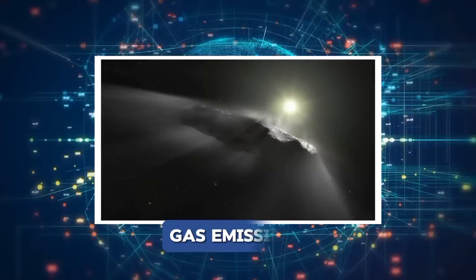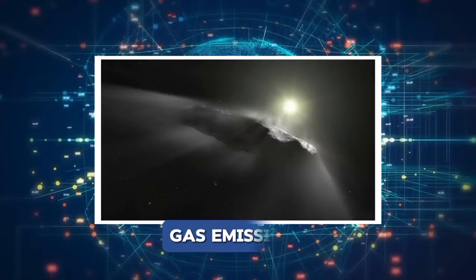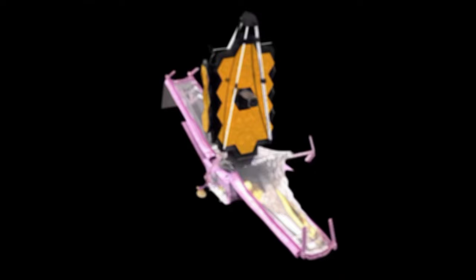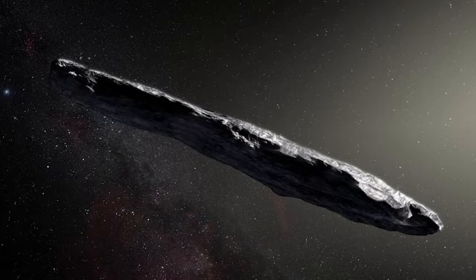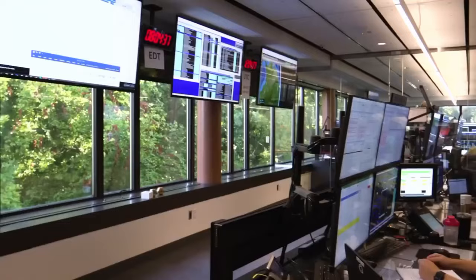While some scientists attribute its behavior to natural phenomena like gas emissions, others entertain the possibility that it could be an extraterrestrial spacecraft. Let's explore the James Webb's revelation of Oumuamua's return and the intriguing possibilities it presents. Is it our friend? Back as a spy? Or a dangerous comet? It's hard to believe what the James Webb Telescope just suddenly uncovered. Oumuamua is back.